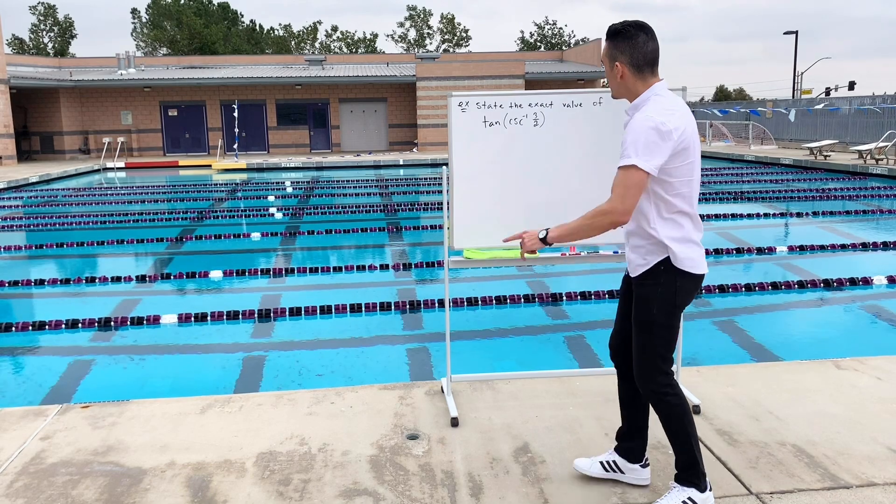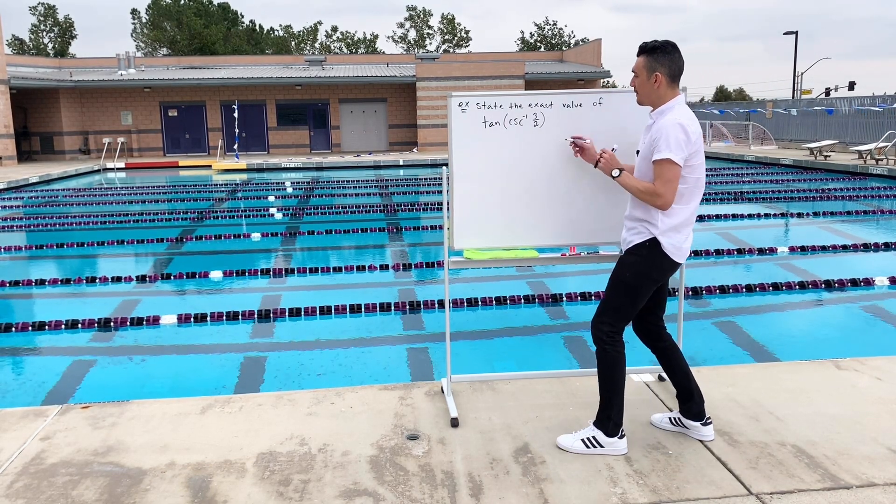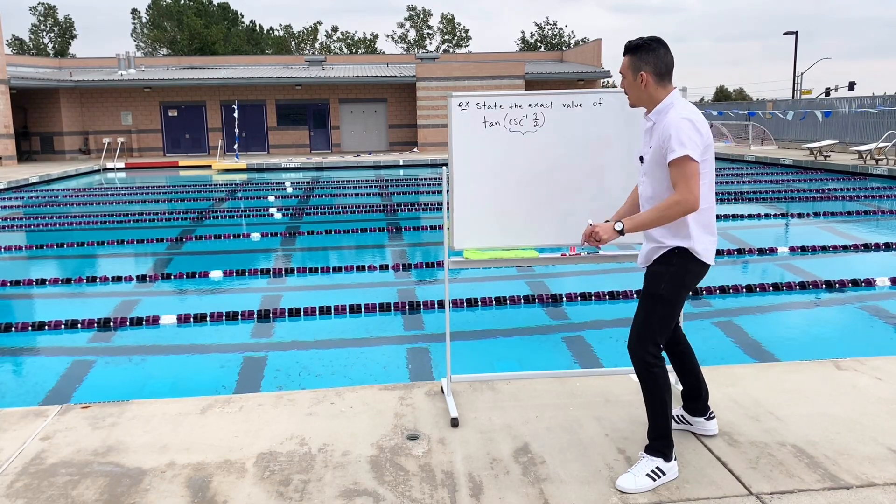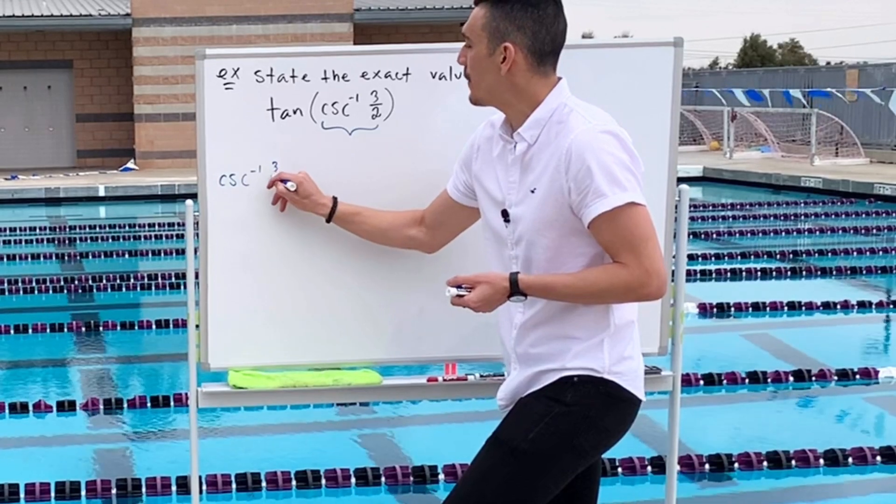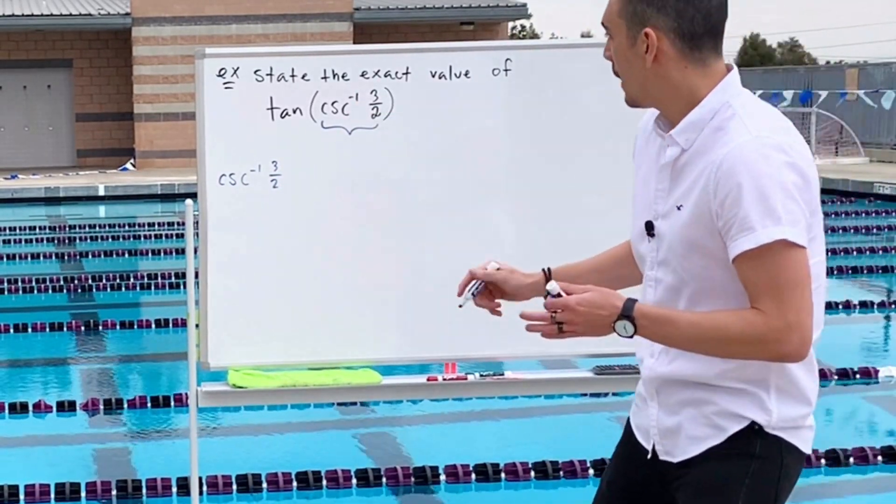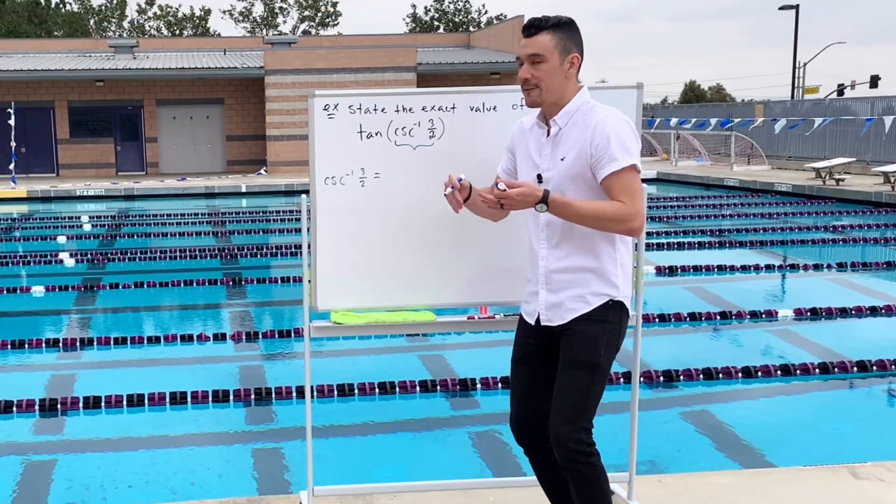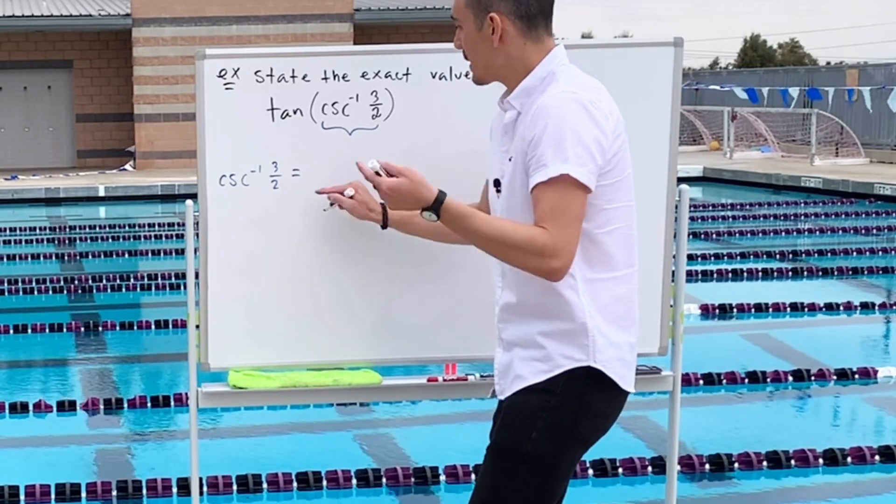Time in. Okay, so first, I would recommend that we place emphasis on the stuff in the parentheses. So we have cosecant inverse of three halves. But what exactly does that equal? Well, based on the fact that we just established, we know that the inverse of a trig function is going to equal some angle theta.